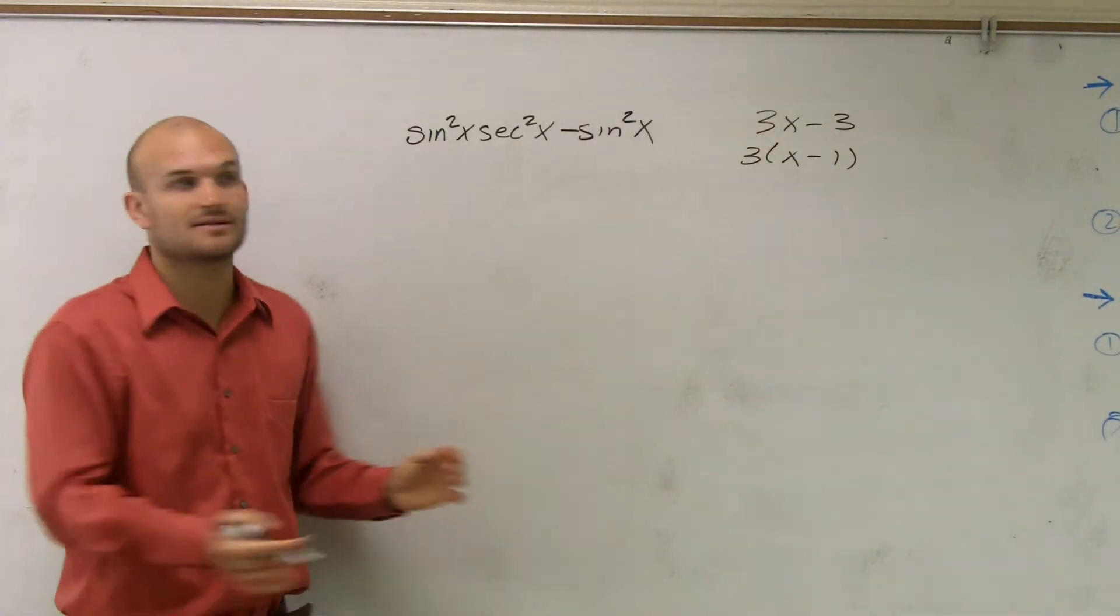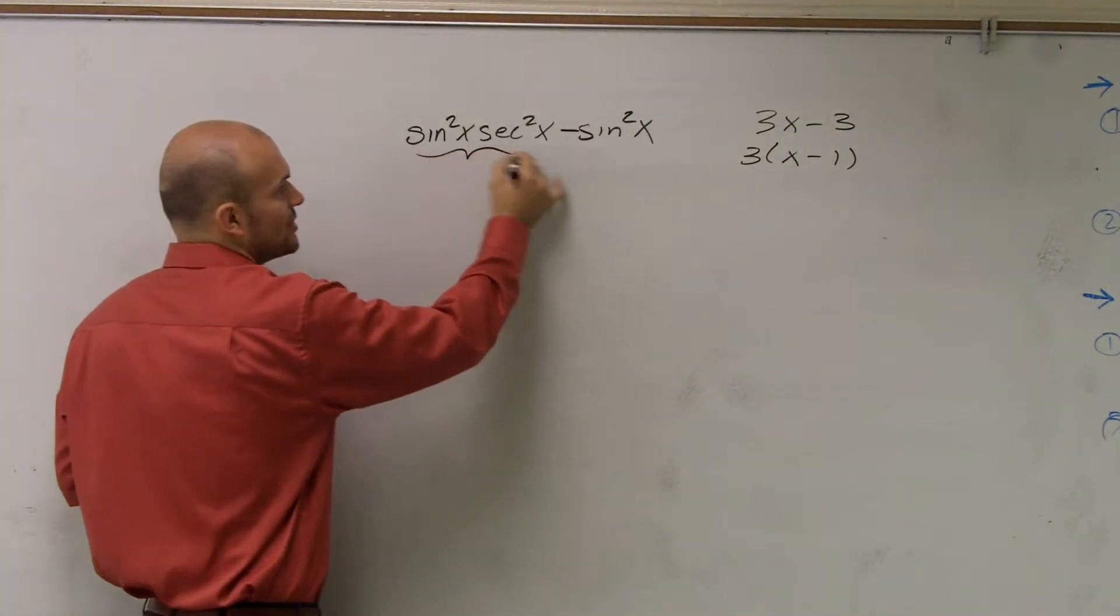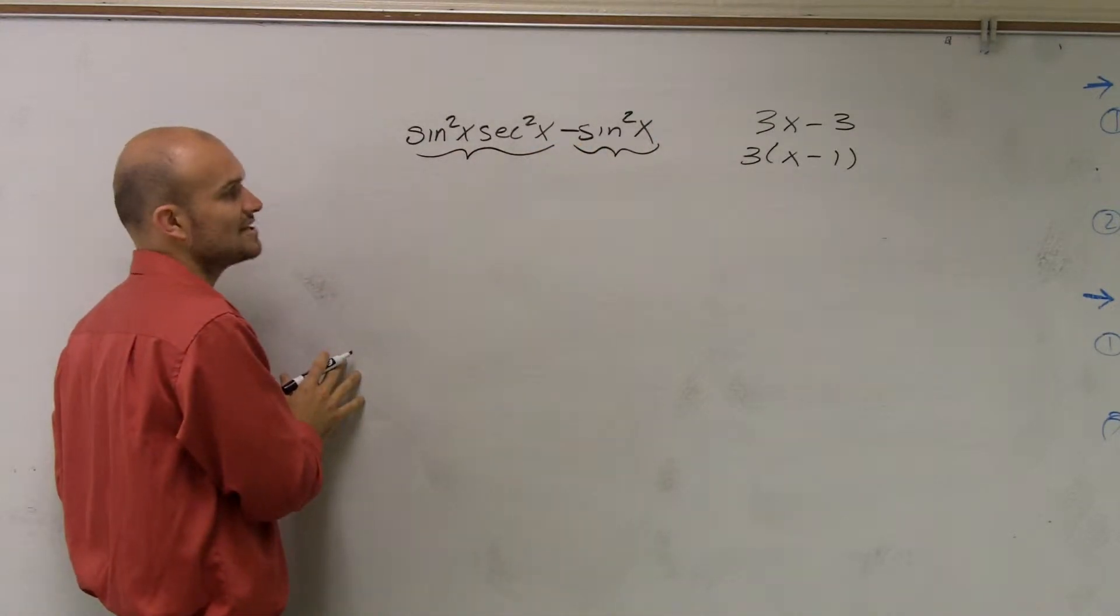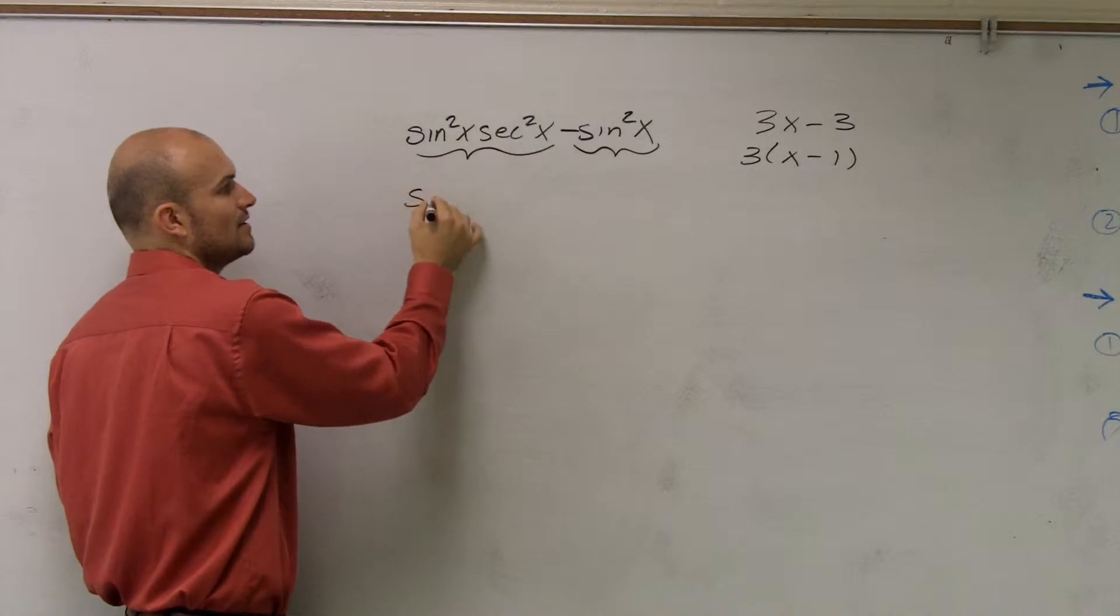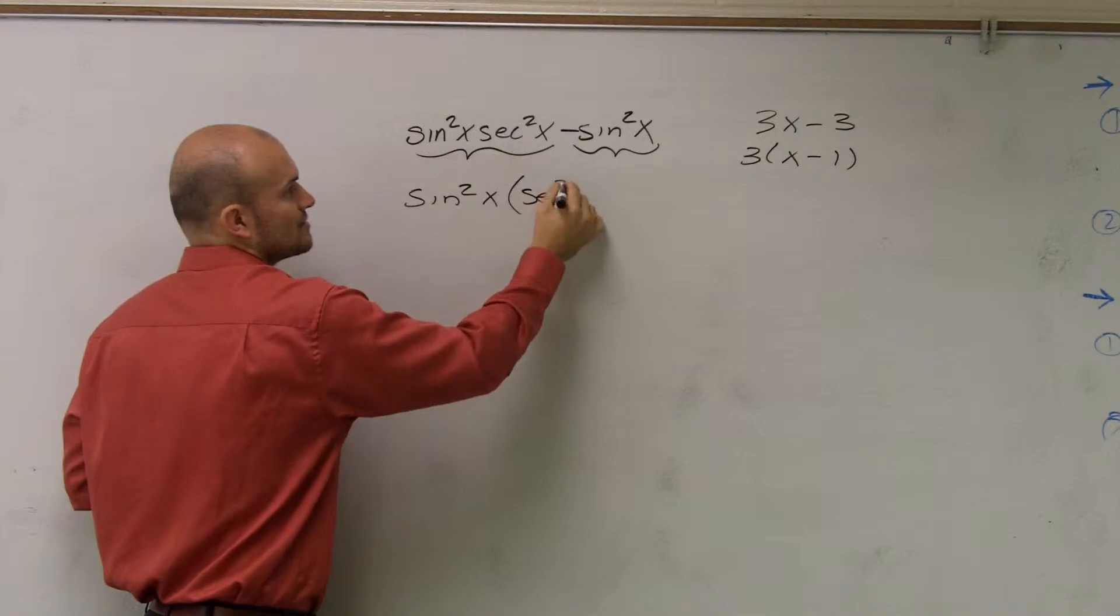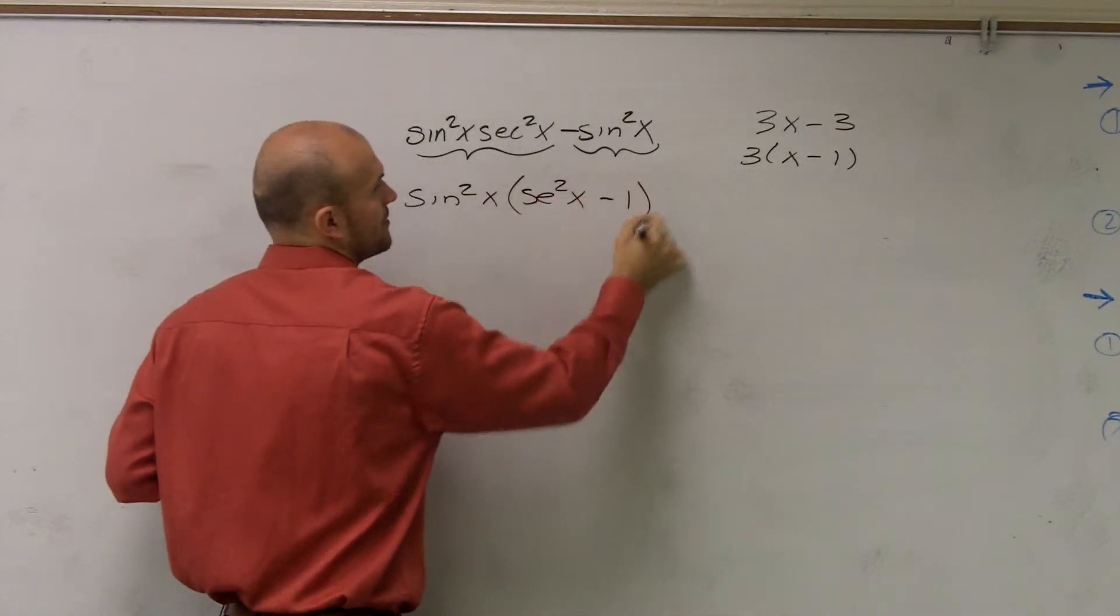You notice that both of these terms share a sine squared of x. So I can factor out a sine squared of x. And what I'm left with is going to be a secant squared of x minus 1.